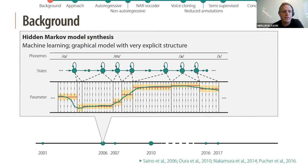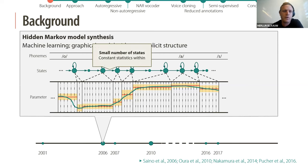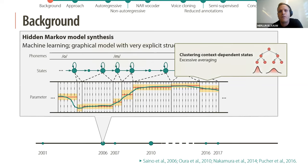A little later, from 2006, people also started to use hidden Markov model-based synthesis. This is a machine learning approach based on a graphical model, with a very explicit structure — for instance, each phoneme is modeled as a small number of states with constant statistics within each state. These states are then clustered in different contexts, which usually leads to a lot of averaging.